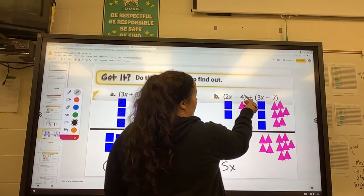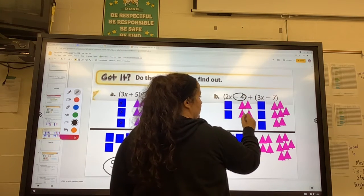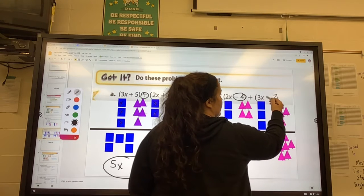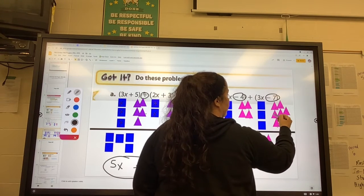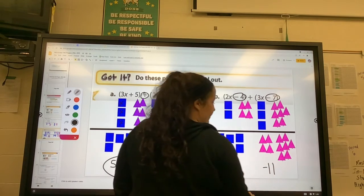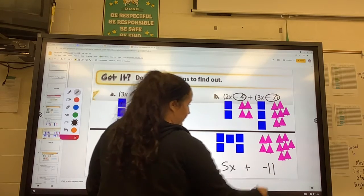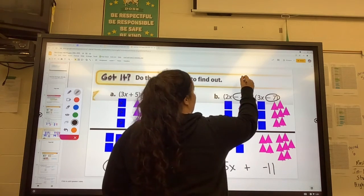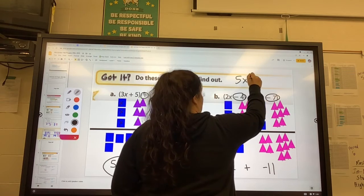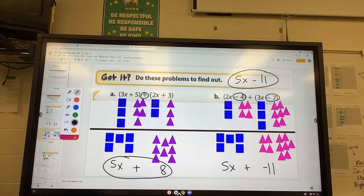And then there are four negatives. Remember that negative attaches to the number, so one, two, three, four. And there are seven negatives: one, two, three, four, five, six, seven, which means seven plus eleven, there are eleven negatives. So this could either be written as 5x plus negative 11, or I would write it as 5x minus 11, and that is your simplified form.